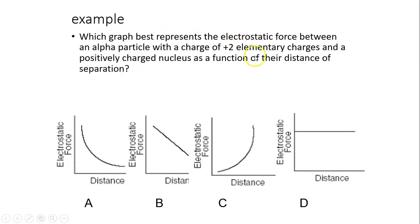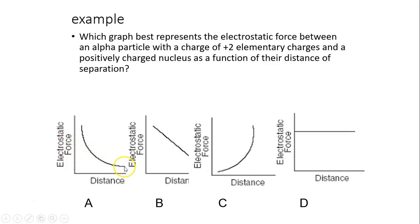Which diagram represents the electrostatic force between an alpha particle — with a charge of positive two elementary charges — and a positive charge of the nucleus, as a function of their distance of separation? An alpha particle is essentially helium without electrons: two protons and two neutrons, giving it two elementary charges. As the distance increases, the force decreases according to Coulomb's Law. So the answer is A.